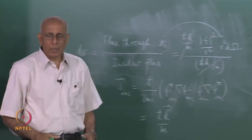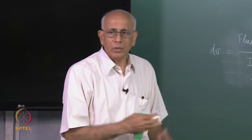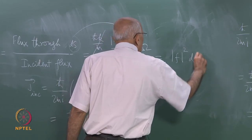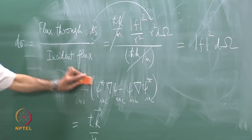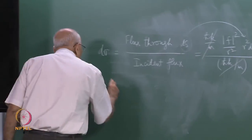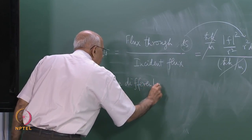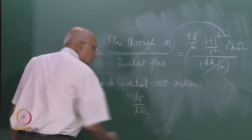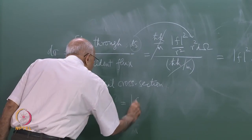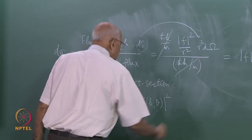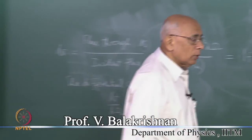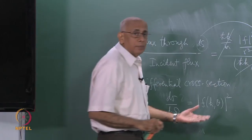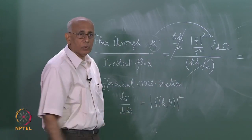Note that if I had taken some amplitude A times e to the i k dot r for the incident wave, there would have been a factor mod A squared which would have cancelled on top and below. This gives us the crucial formula: the differential cross section d sigma divided by d omega equals modulus of f of k theta whole squared. So the detector, by measuring the flux, is actually directly measuring the modulus squared of the scattering amplitude. The job is now to compute this quantity for a given potential and compare it with observation.